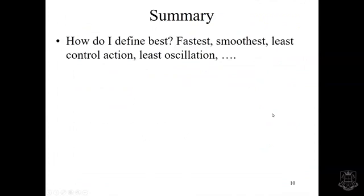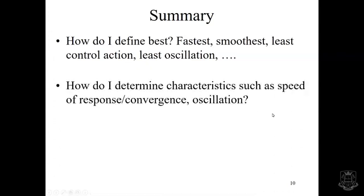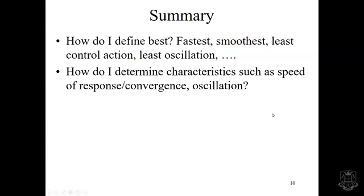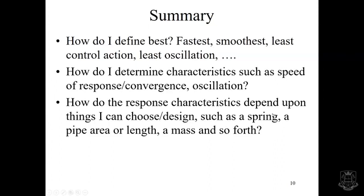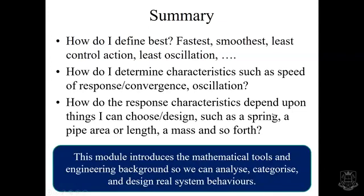So a summary. Key questions we need to ask are: how do I define best — is it the fastest behaviour, the smoothest, the one that uses the least control action or the least oscillation? How do I determine characteristics such as speed of response, convergence and oscillation, and how do I actually calculate these? It's one thing looking at a graph, but I need to put a number on them. How do the response characteristics depend upon things I can choose or design — such as which spring to use, what pipe area or length, or what mass? This module introduces the mathematical tools and engineering background so that we can analyse, categorise and design real system behaviours so that systems behave the way we want and in a way that might be considered optimal in some sense.